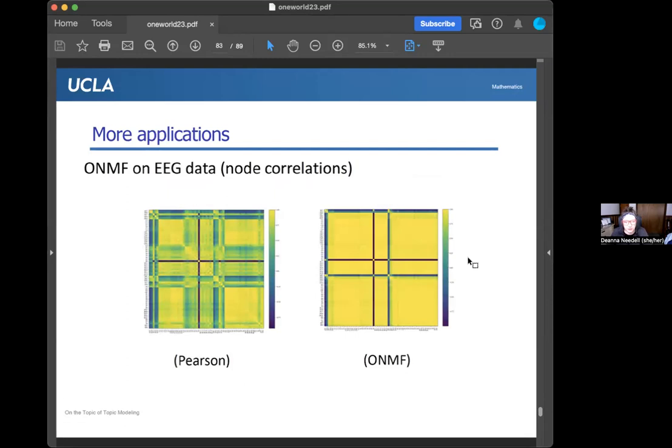What we did here was we did an online NMF, or you can even just say NMF factorization. From those two factors, we then took a Pearson correlation. On the left, what you're seeing is just a straight up Pearson correlation of the EEG data to begin with. In EEG data, correlations are important. You want to see which nodes fire together, which nodes don't fire together. You see some interesting patterns here. You see really strong correlations between these two nodes.